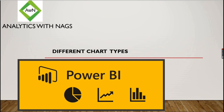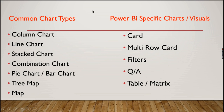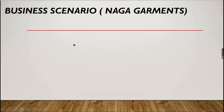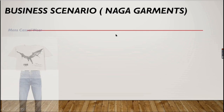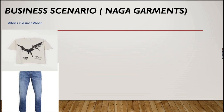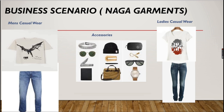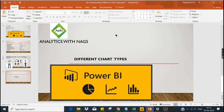Welcome to Analytics with Nags. In this video we are going to see different chart types that Power BI supports. There are two types: common chart types and Power BI specific chart types. Common chart types are used by all BI or reporting tools, while Power BI specific ones are mostly only used in Power BI. Our business scenario is a person owning Naga Garments, selling men's and ladies' casual accessories, for whom we are building a dashboard.